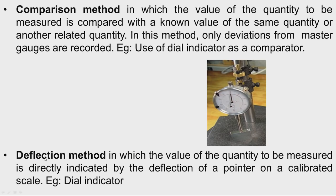The fourth method is the deflection method, in which the value of the quantity to be measured is directly indicated by the deflection of a pointer on a calibrated scale. Again, we can take the example of a dial indicator — when we insert the workpiece between the datum and the plunger, the pointer deflects and gives the displacement.